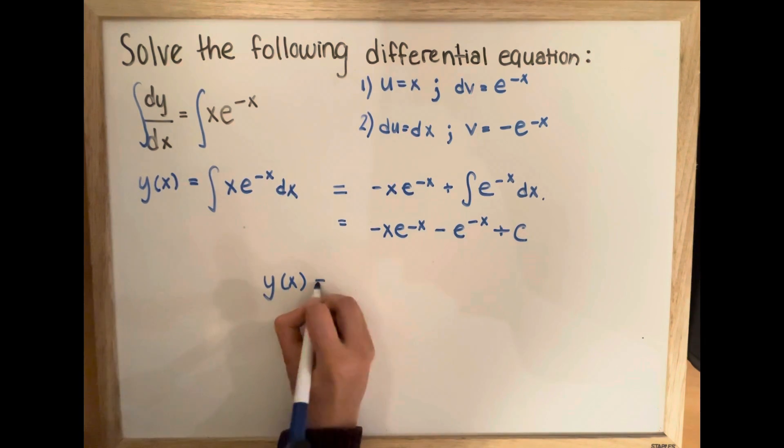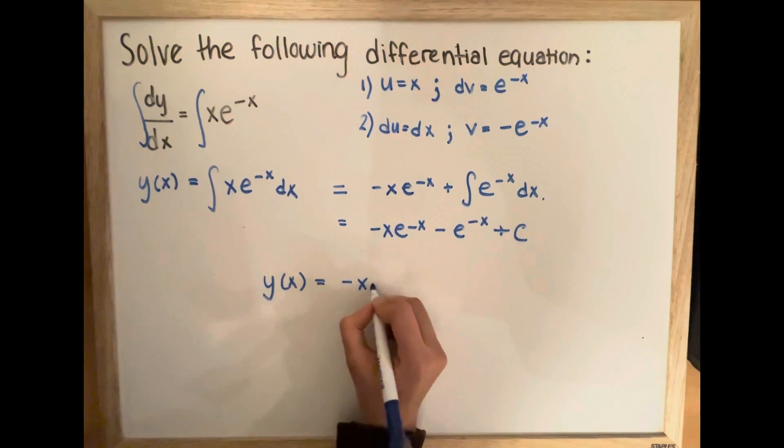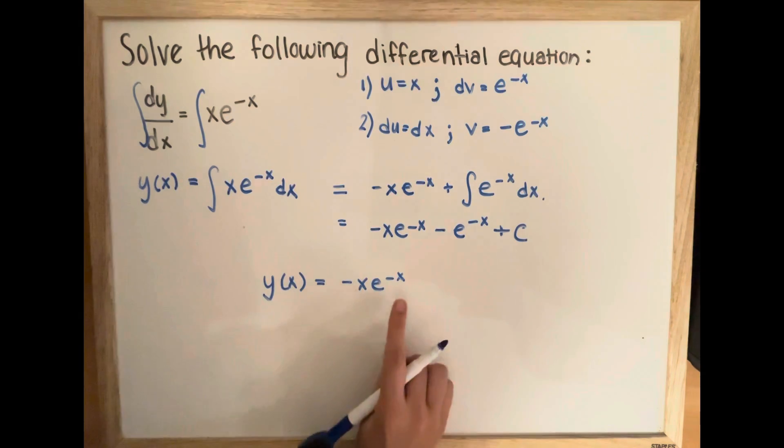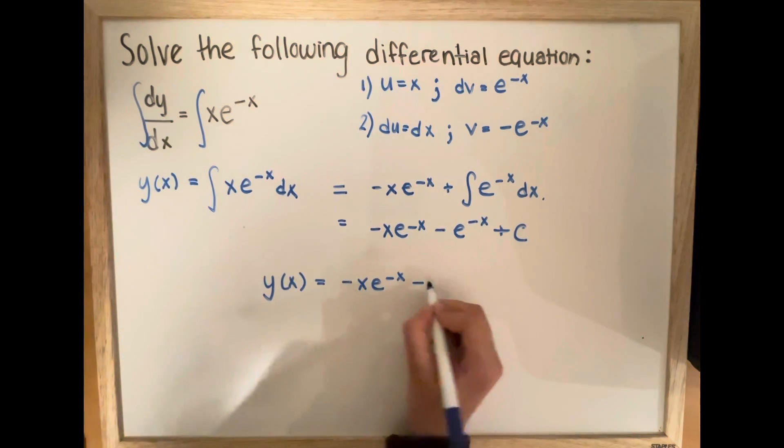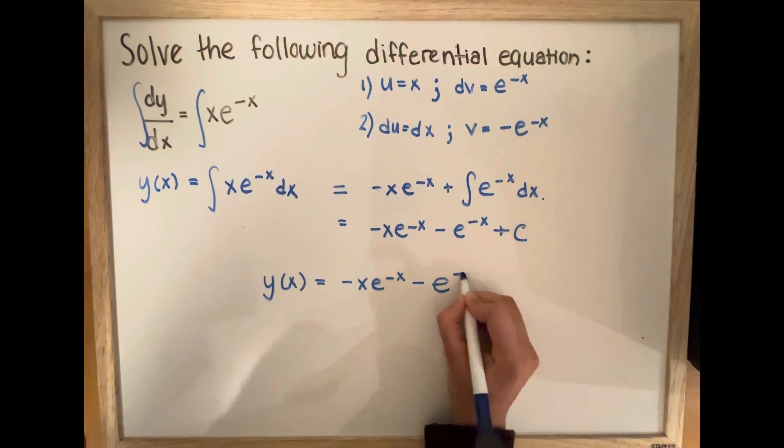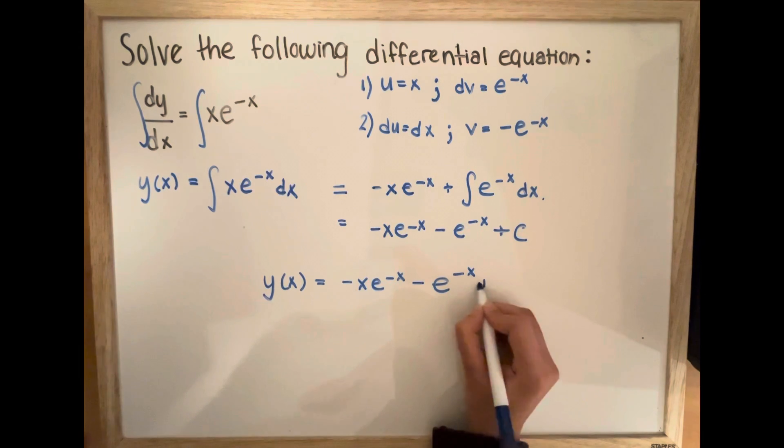So our final equation is going to be y is equal to negative x e to the negative x minus e to the power of negative x plus c.